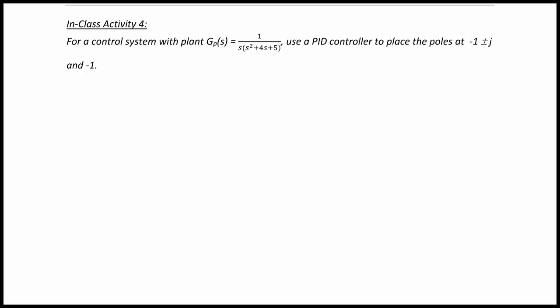And on to the final example for today's lecture. For a control system with plant gP of s equal to 1 over s times s squared plus 4s plus 5, use a PID controller to place the poles at negative 1 plus or minus j and negative 1.